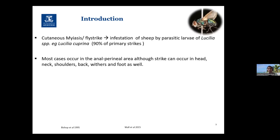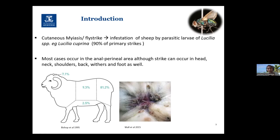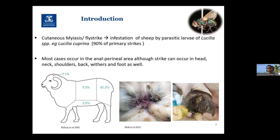Let me briefly introduce the sheep blowfly. Cutaneous myiasis, or fly strike, means the infestation of sheep by the parasitic larvae of Lucilia species. In Australia, more than 90 percent of fly strikes are initiated by Lucilia cuprina. More than 80 percent of cases occur in the breech area, as you can see in this picture, though it's not uncommon to see cases on the body as well.